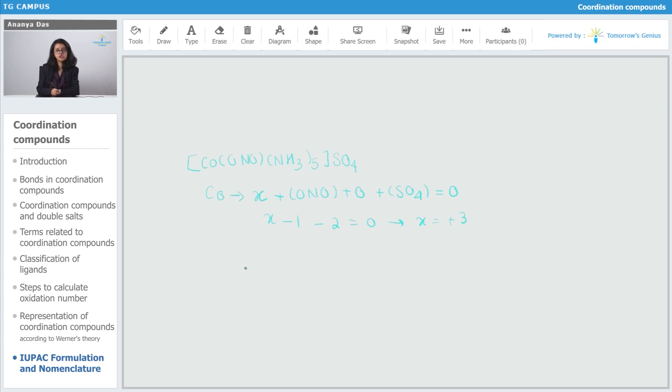In case of ligands, first you are going to name the ammine. This is ammine and this is nitrito-O. Ammine is going to come first. So pentaammine nitrito.